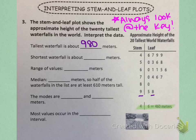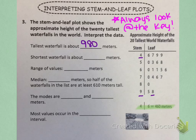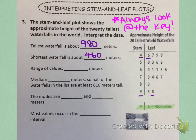Now we look for the shortest waterfall. Because the stem and leaf plot is listed from least to greatest, that means this is going to be the first value. The first stem is 4 and the first leaf is 6. The 4 represents 400, and the 6 represents the tens, so that's 60. So the shortest waterfall is about 460 meters.